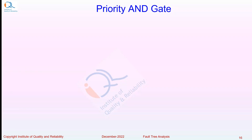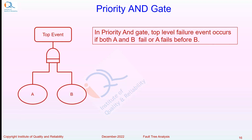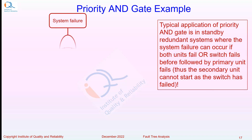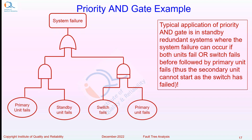Occasionally a Priority AND gate is used. In a Priority AND gate, the top-level failure event occurs if both A and B fail, but also only if A fails before B fails. A typical application is in standby redundant systems, where system failure occurs if the switch fails first and then the primary unit fails — meaning the secondary unit cannot start because the switch had already failed.